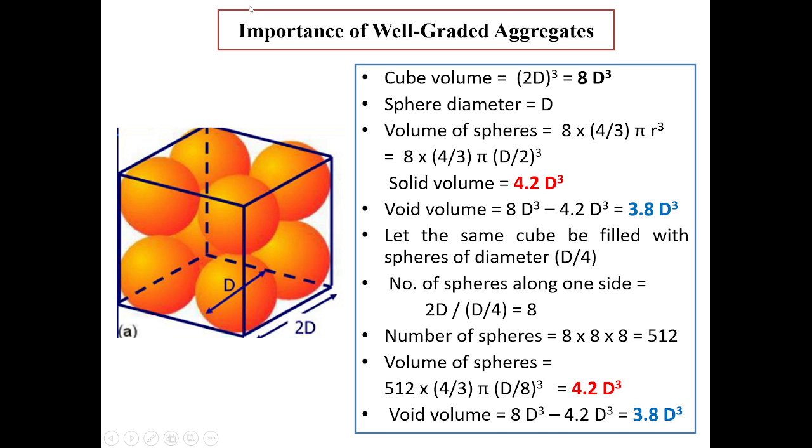Let me demonstrate the importance of well-graded aggregates or the importance of using aggregates of all the sizes while making concrete. I will take one cube. Each side is 2D and therefore cube volume is (2D)³ = 8D³. I will take solid spheres. The diameter of each sphere is D and therefore volume of spheres will be 8 × (4/3)πr³ because we can fit 8 spheres in this cube.